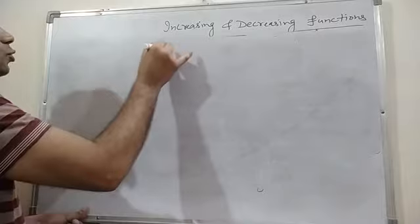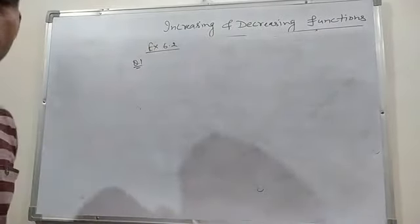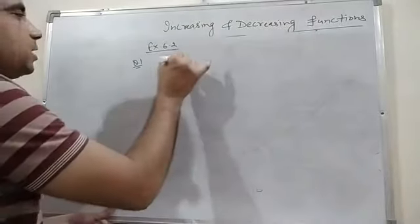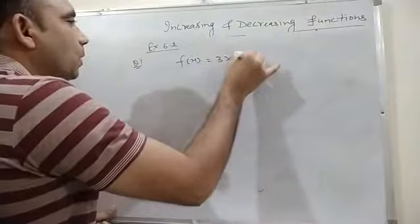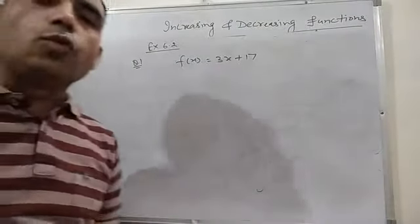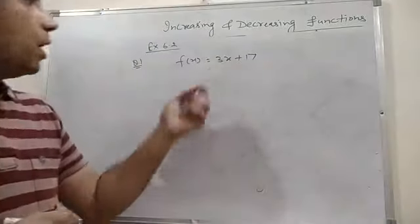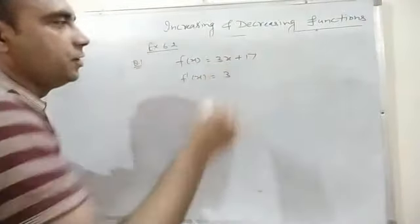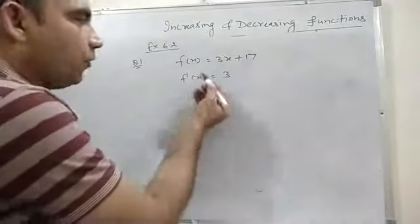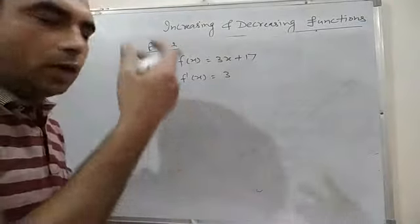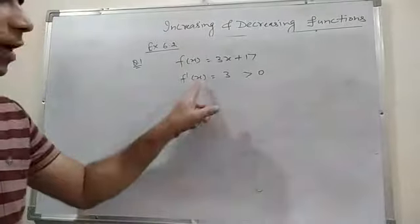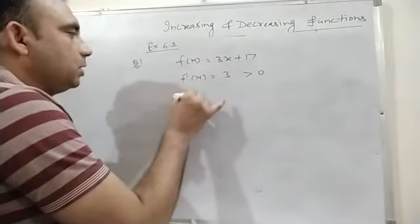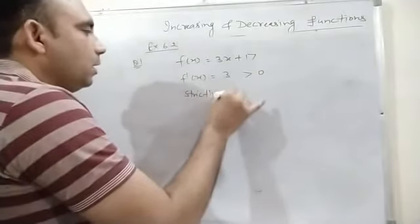Exercise 6.2, Question 1 — the questions are simple yet important from the examination point of view. f(x) = 3x + 17. We have to prove the function is strictly increasing on ℝ. Differentiating with respect to x: f'(x) = 3 (since derivative of 3x is 3 and of 17 is 0). f'(x) = 3, which is free from x, does not depend on x, and is always greater than 0.